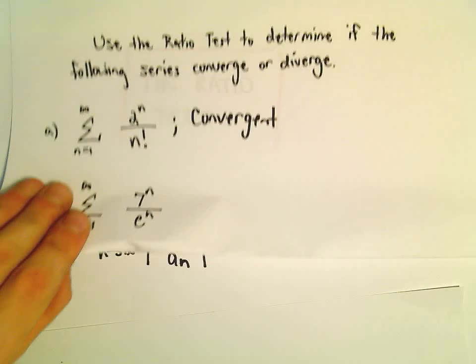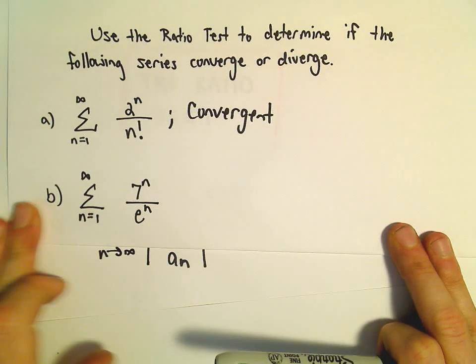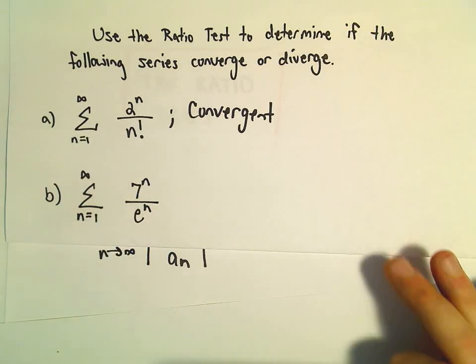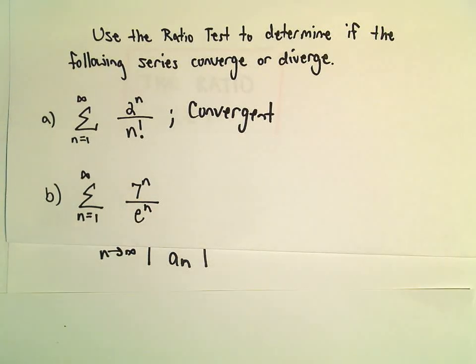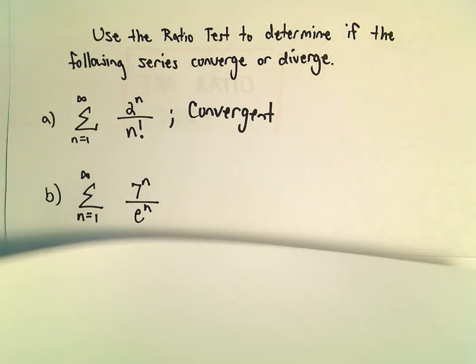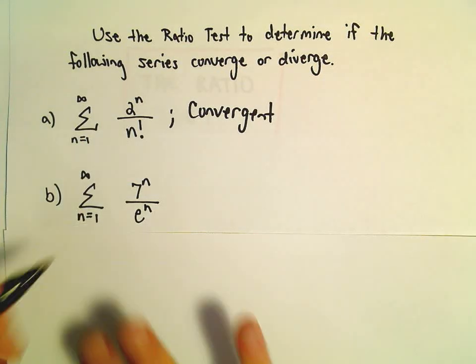Alright, so one more example here using the ratio test. Here we've got the series from 1 to infinity of 7 to the n over e to the n. You might recognize this as a geometric series, but we can use the ratio test all the same.